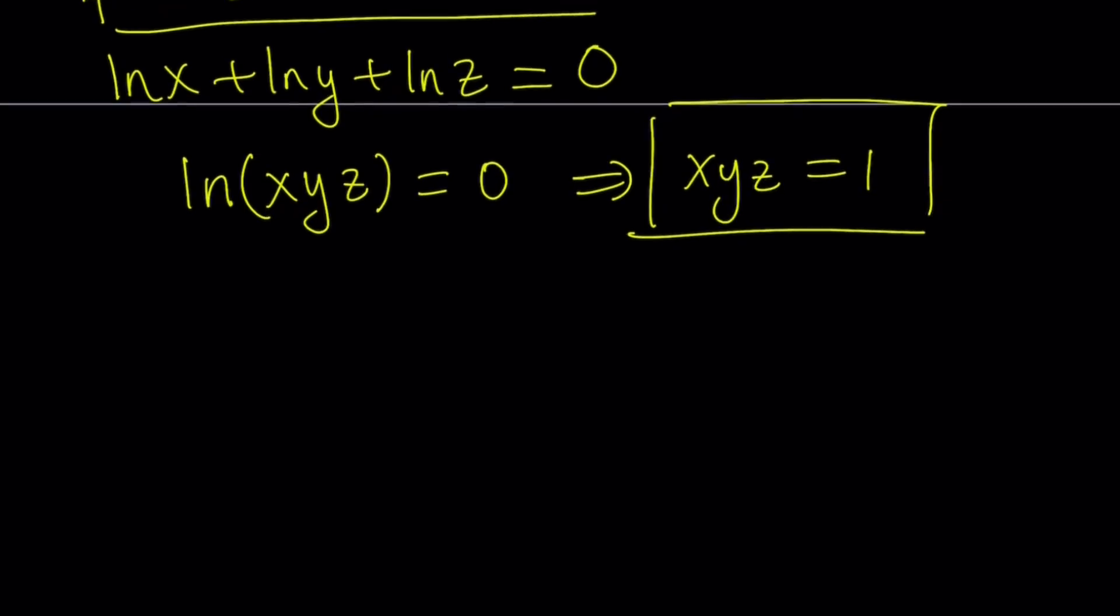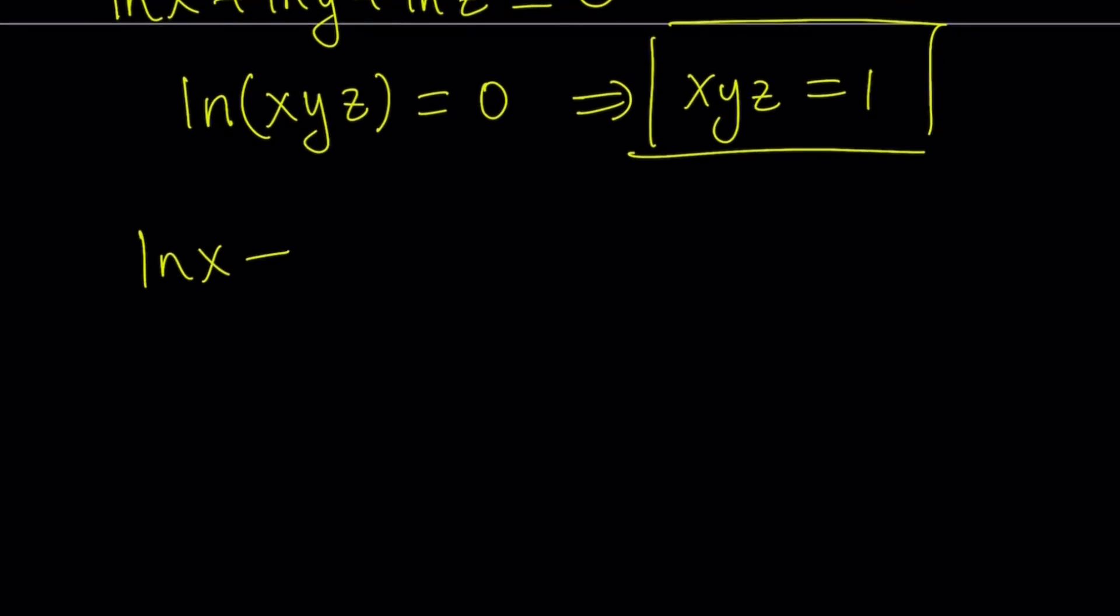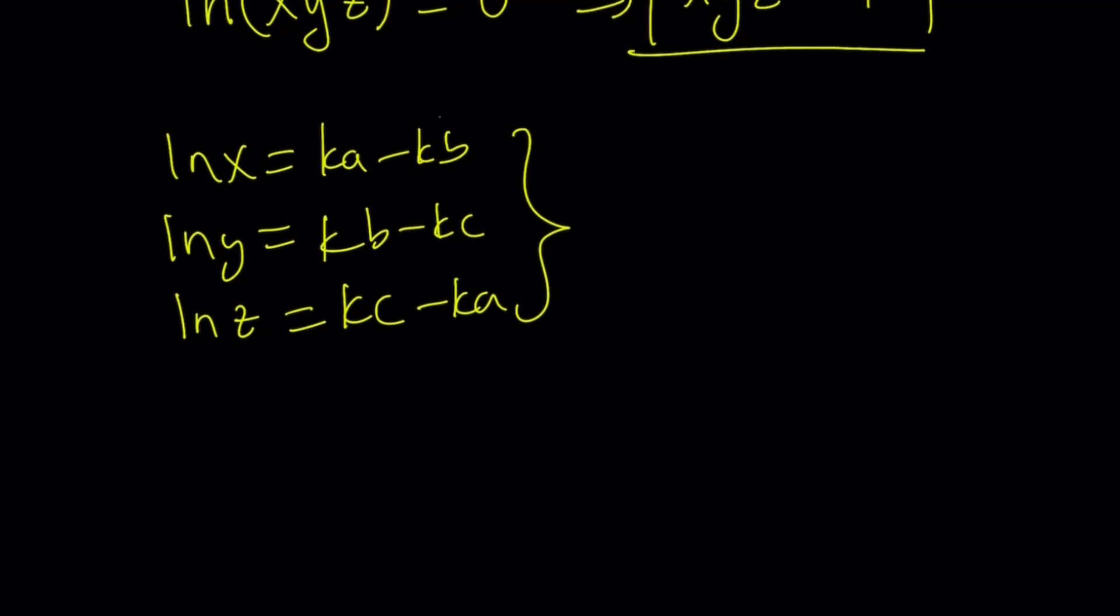And you can also have an alternative from here. Let's say you got ln x plus ln y plus ln z equals zero. Or let me go back a little bit and take it from here. So at the point where you got ln x equals ka minus kb, ln y equals kb minus kc, and ln z equals kc minus ka, you could also do the following to find xyz. You can write x, y, z in terms of ka, b, c. So by using the definition of logs, the base is e here. So you can basically write x as e to the power ka minus kb, y as e to the power kb minus kc, and z as e to the power kc minus ka.